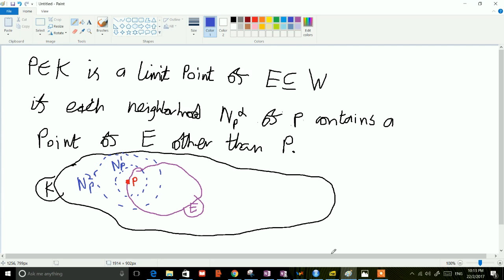Well, if it is a limit point, it'll be a limit point with respect to a particular set. We would say perhaps that P is a limit point of the subset E of our space W. So when would P be a limit point of this subset E? Well, the condition for that to be true is that every single neighborhood of P should contain a point of E other than P itself.